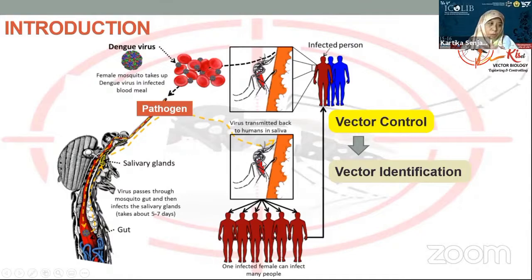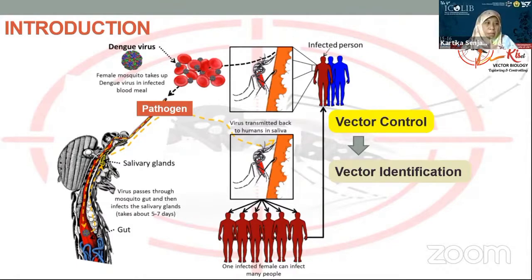The treatment so far is more symptomatic. At the moment, vaccine development is still in the final stage of clinical trials and not yet readily available in the market. Therefore, vector control strategy is a very important measure to control this disease.